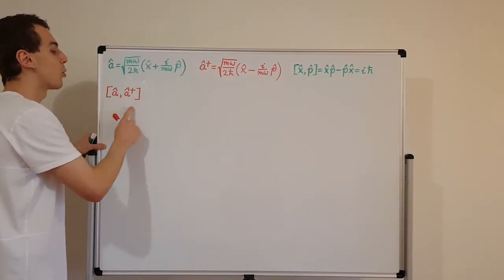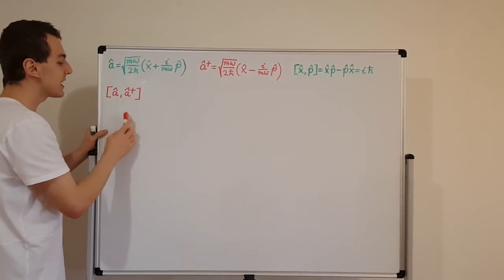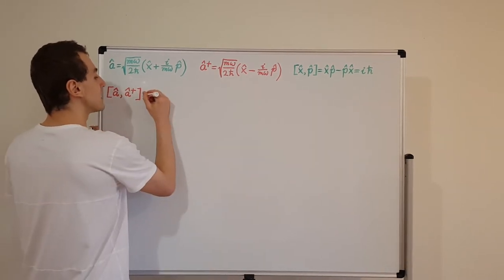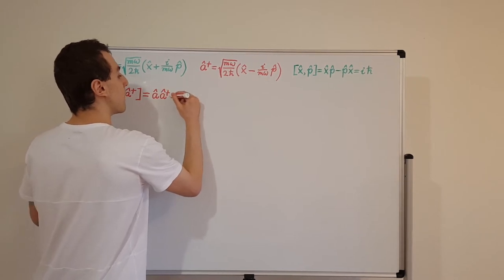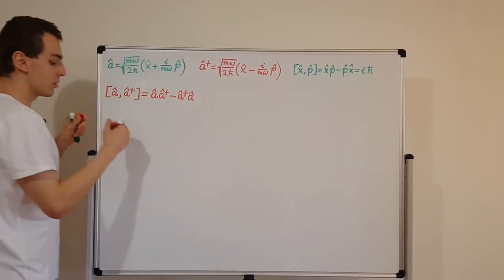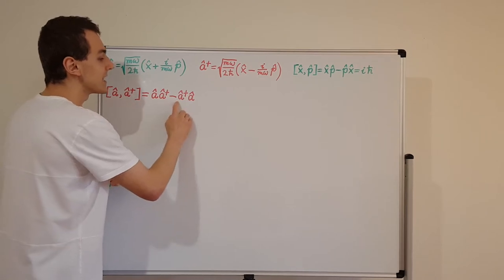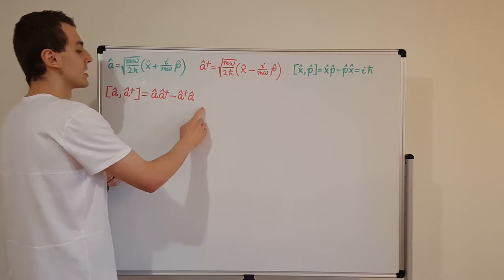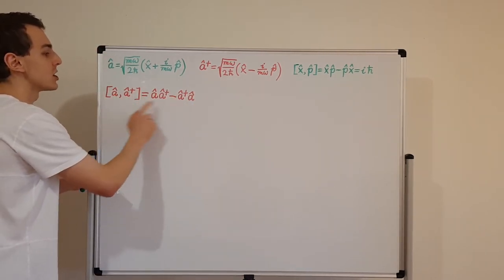That's why we are deriving this expression. The commutator of a with a dagger is the same as a times a dagger minus a dagger times a. In the first term we have a and then a dagger, and in the second term we swap them. This condensed notation is equivalent to this expanded expression.